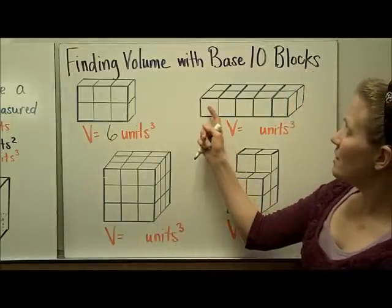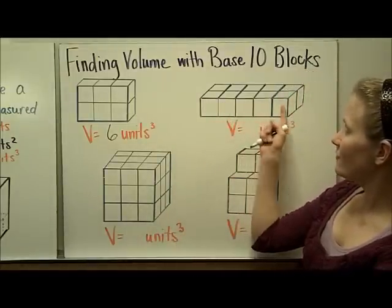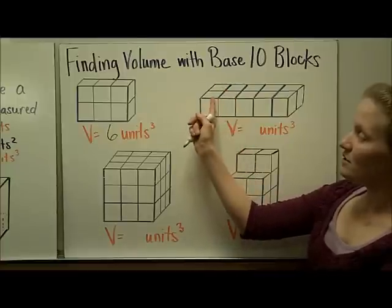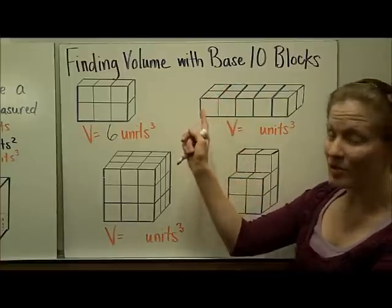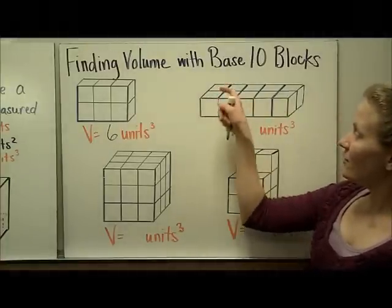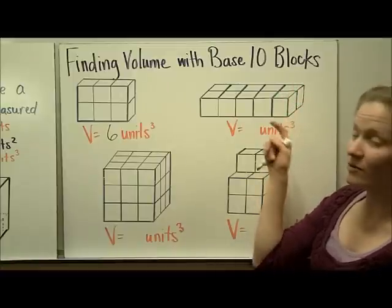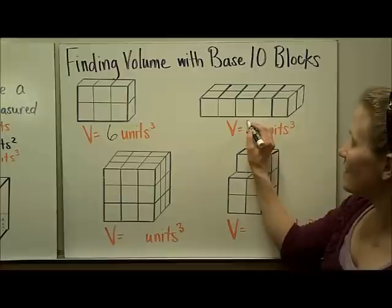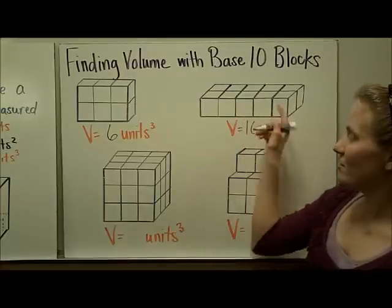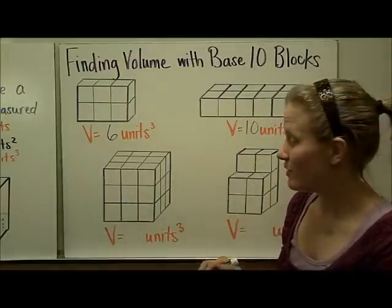On the next one we see 1, 2, 3, 4, 5 going across. But if you look here you can see it's two deep, so it would be a row of 5 and another row of 5 back there which would be 10. 5 times 2 is 10. So this figure's volume is 10 cubic units.